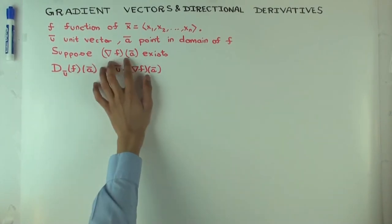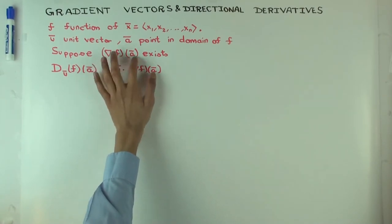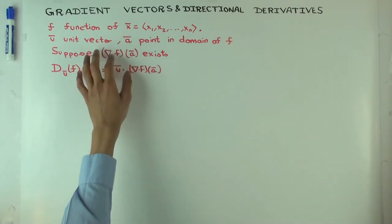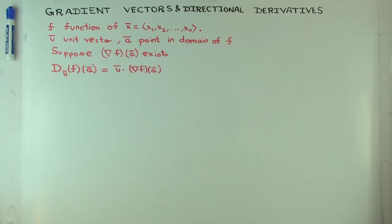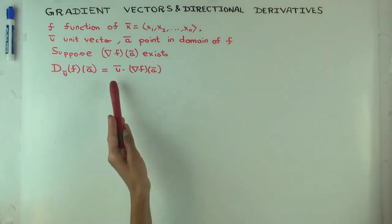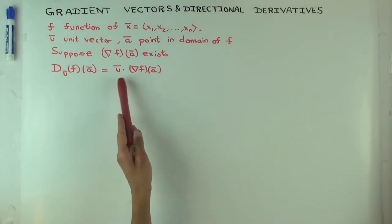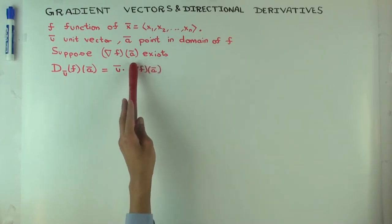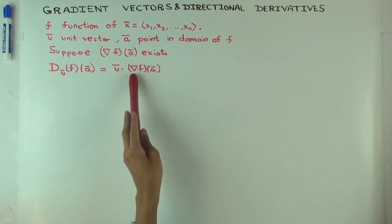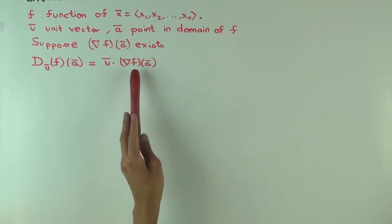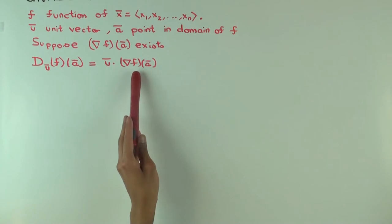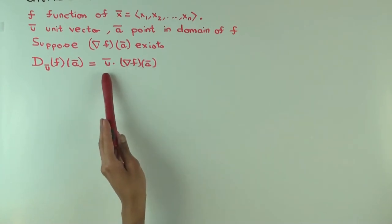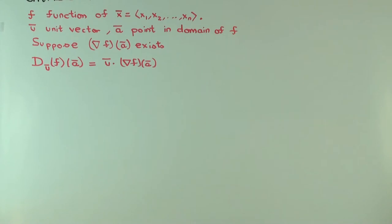The magnitude of the gradient vector describes how quickly the function is changing. The direction of the gradient vector describes the direction along which the change is concentrated. So this dot product is measuring two things: how large the gradient is, and how closely related the given direction is to the direction of the gradient.